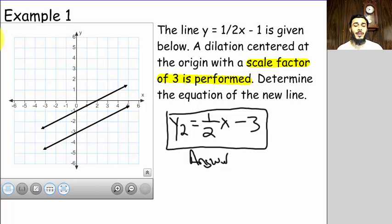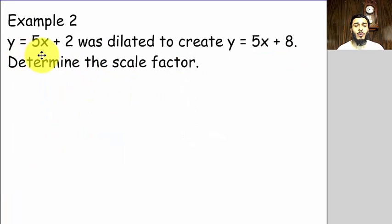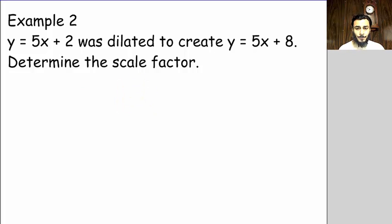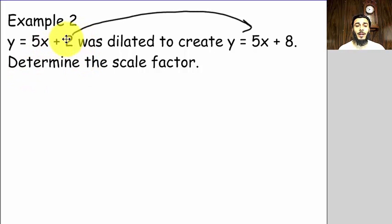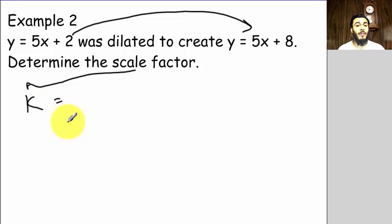Dilated lines are parallel to each other because they have the same slope. Example two: y = 5x + 2 was dilated to create y = 5x + 8 — determine the scale factor. We need to find what they multiplied by to go from this line to this line. We look at the y-intercepts: to get scale factor k, we do eight divided by two.